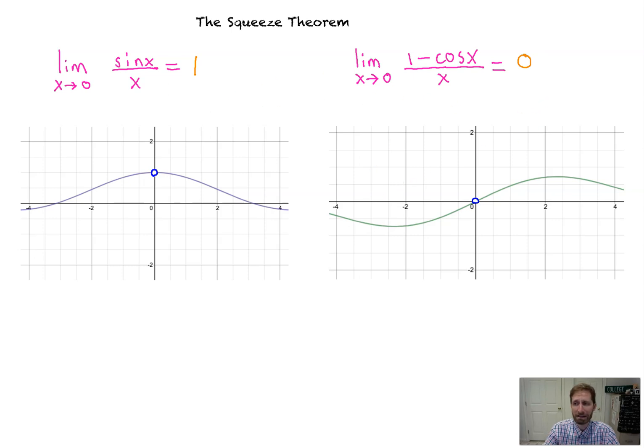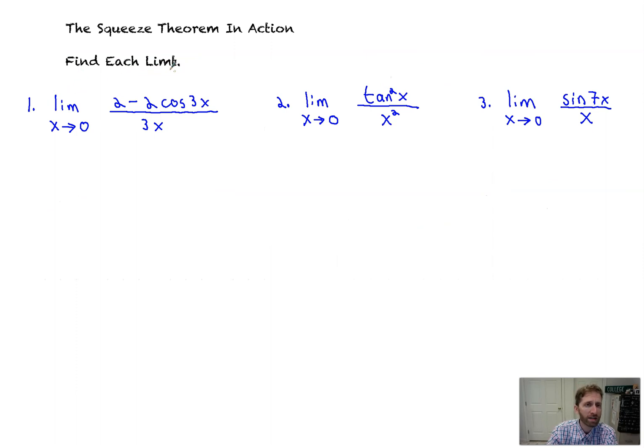So we're asked to find each limit using those squeeze theorem results. So I don't want you to be confused. We use the squeeze theorem to prove those two formulas, if you will. So the limit as x goes to zero of two minus two cosine three x all over three x. Oh, my goodness. Well, this kind of seems like it's that one minus cosine x over x type of setup. It's close to it. So I'm going to rewrite this so that we're close to that. So we get the limit as x goes to zero. I'm going to factor out a two from here, and I'm going to do that because it's going to leave me with one minus cosine of three x all over three x. Now, why does this matter?